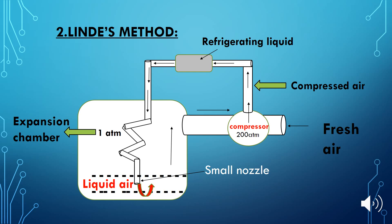The second important method for the liquefaction of gases is Linde's method. In this method, cooling is produced by the free expansion of compressed gas into a low pressure region through a small nozzle, repeatedly, until the gas is ultimately liquefied.